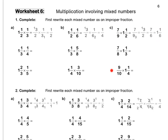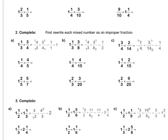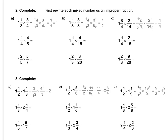Press pause to complete question C. Question 2: remember to always first rewrite each mixed number as an improper fraction. For A, we rewrite 1 and one third as four thirds, then times by three quarters. We divide top and bottom by 4, then divide top and bottom by 3, which equals 1 whole.